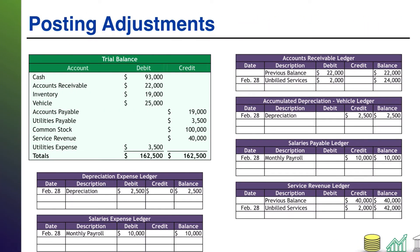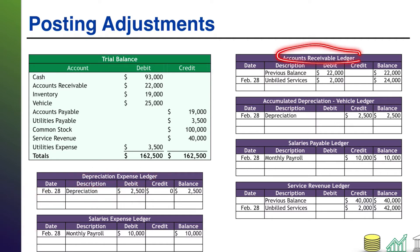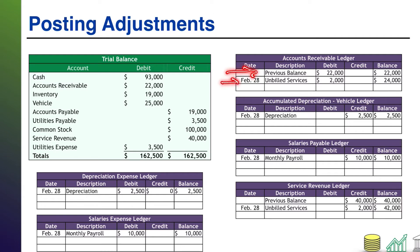So here we go. Once we make our adjusting journal entries, we have to post those journal entries the same way we would post any other journal entry. For the new accounts like depreciation expense or salaries expense, those didn't exist on the trial balance, so we're going to create their ledgers and add a line in for those adjusting entries. For accounts like accounts receivable or service revenue, we already had a balance — here was the previous balance, and then we're going to tag on that next entry, that new journal entry.